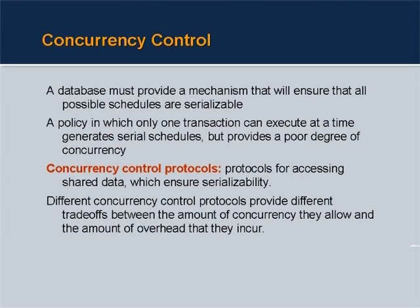The database system must provide a mechanism to ensure that all possible schedules - the order in which things happen in the database - are serializable. A policy which executes only one transaction at a time generates serial schedules, but provides poor degree of concurrency and poor utilization. Therefore, we run things concurrently but use concurrency control protocols which ensure serializability.